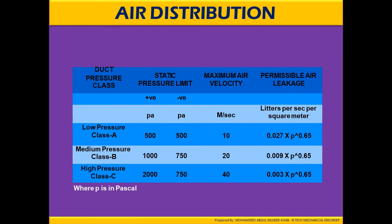These are the different classes of ducts and their static pressure limits, maximum air velocities, and permissible air leakages. Any duct in an HVAC system is classified into low pressure class A, medium pressure class B, and high pressure class C. Depending on the class and application, different pressure limits are obtained per SMACNA and ASHRAE standards, which define the maximum pressure drop and maximum air velocity.